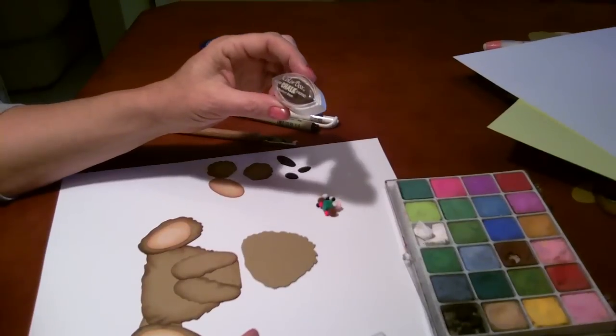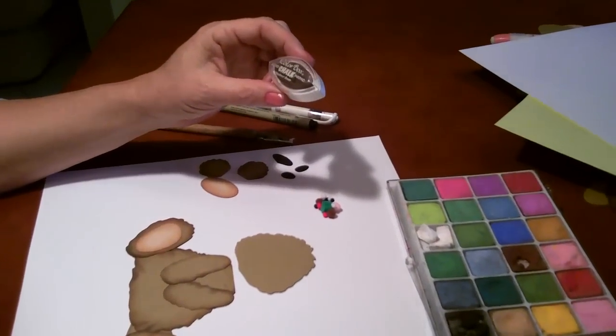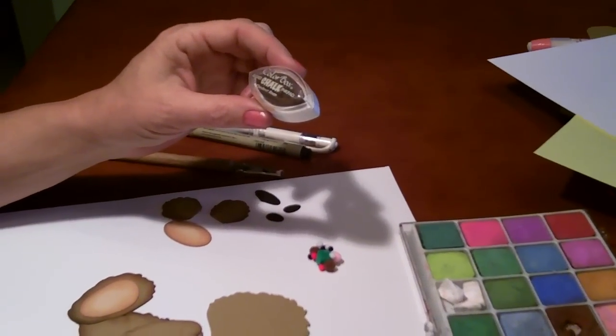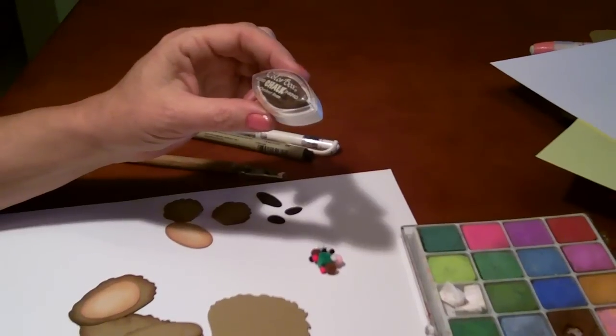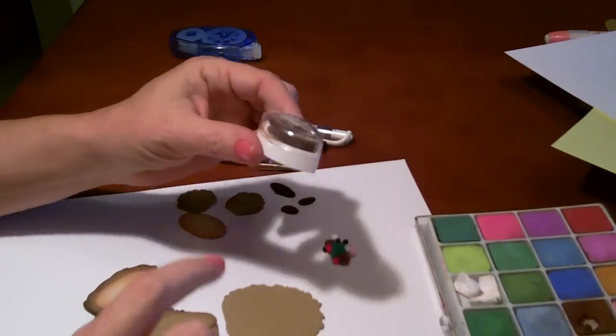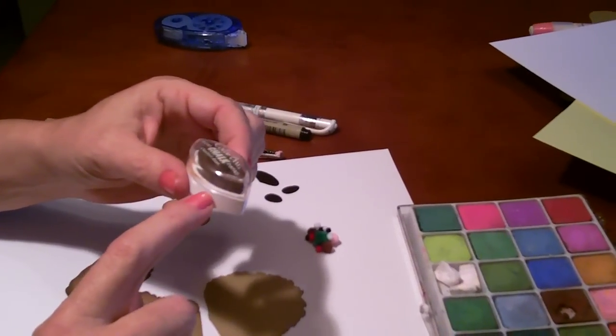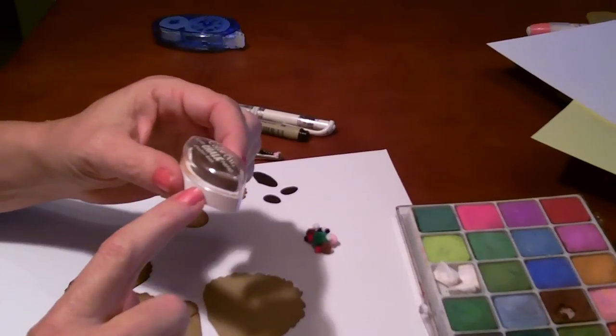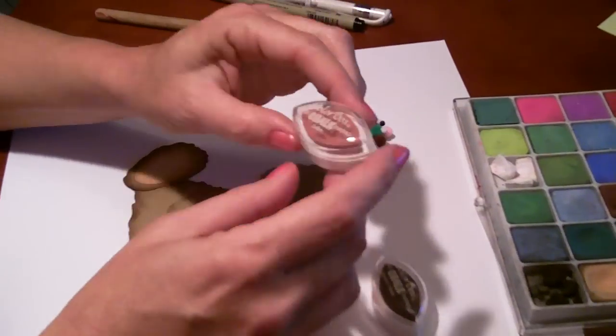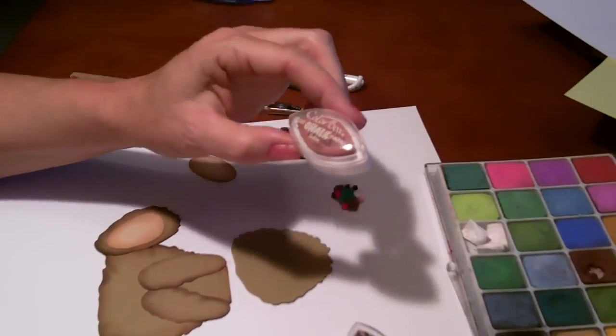And then I use one made by Color Box called Chestnut Roam. That is my favorite color for chalking the bears. You want to make sure you get the ones with the white bottom. That's the chalk. The black bottoms are the pigment inks. So Chestnut Roam for the bears and Toffee is a great color for skin.